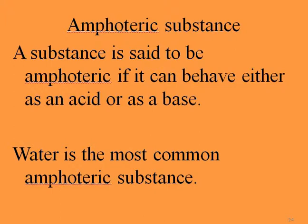When a water molecule acts as a base and gains a proton, it becomes hydronium ion, which is H₃O⁺. So it's going to be H₃O⁺ when it gains a proton, and OH⁻ or hydroxide ion when it loses a proton. Whenever water acts as a base, you will see hydronium ion on the product side; whenever water acts as an acid, you will find OH⁻ or hydroxide ion on the product side.